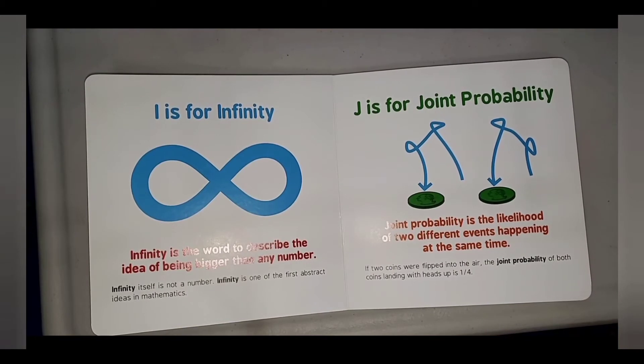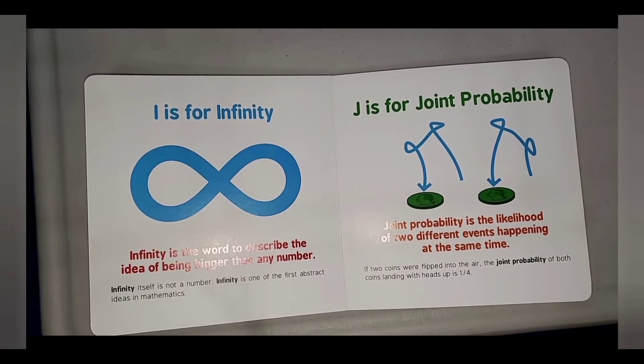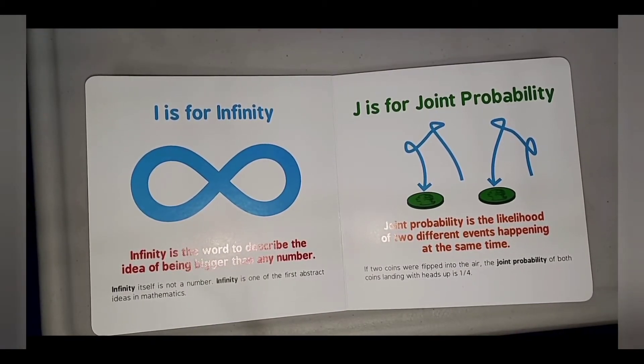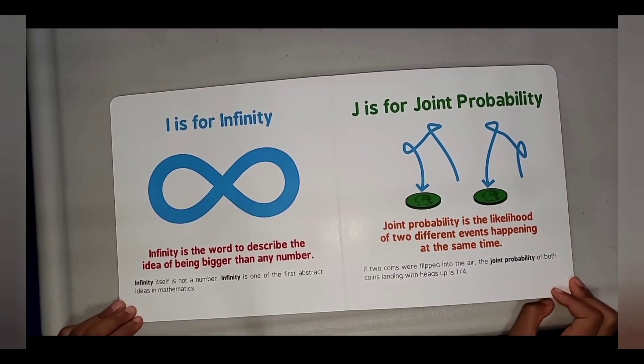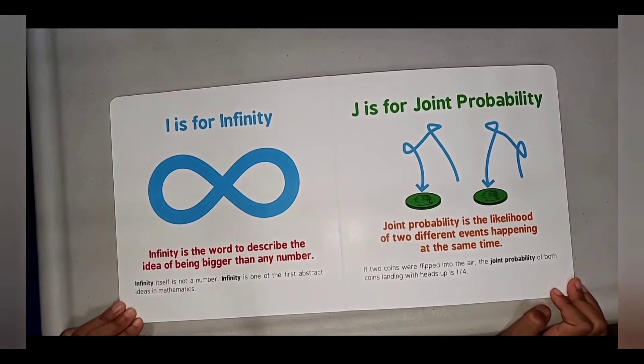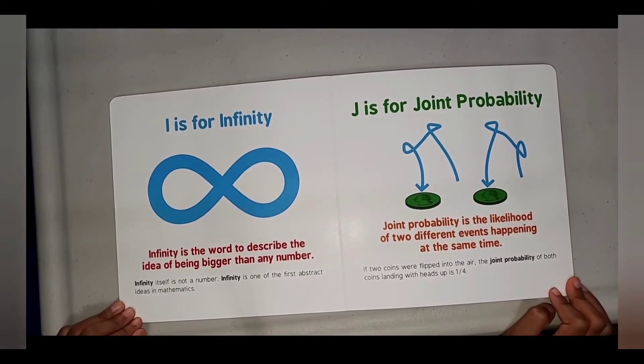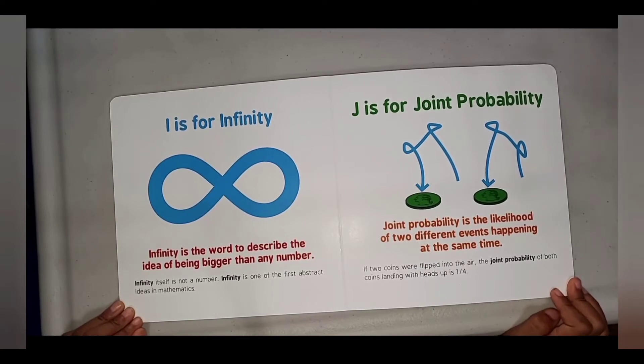J is for Joint Probability. Joint probability is the likelihood of two different events happening at the same time. If two coins were flipped in the air, the joint probability of both coins landing with heads up is one-fourth.